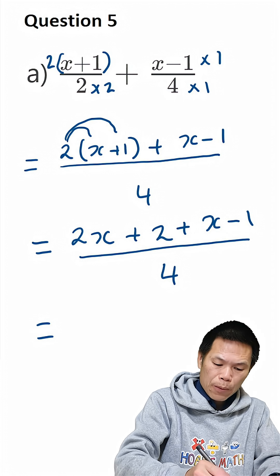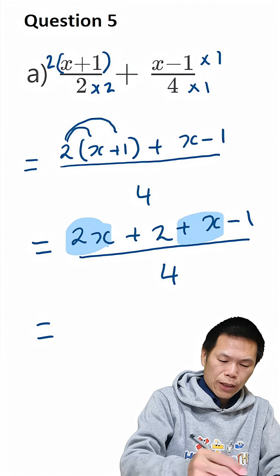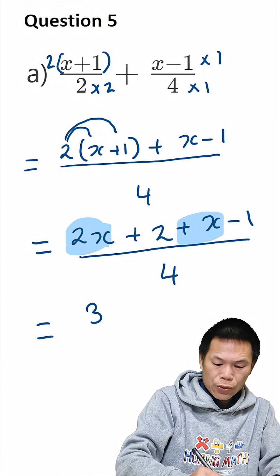so we have 2x with plus x. So 2 plus 1 is 3. So the answer is 3x.